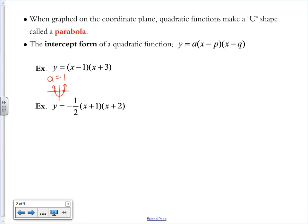It's the opposite of the two numbers that you're looking at. So our P value is positive 1, and our Q value is negative 3. The two coordinates of the X intercepts are 1, 0 and negative 3, 0. That's going to help us a lot when graphing because we'll already have two points on the curve.